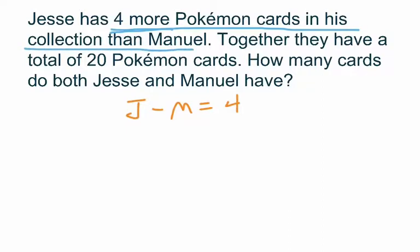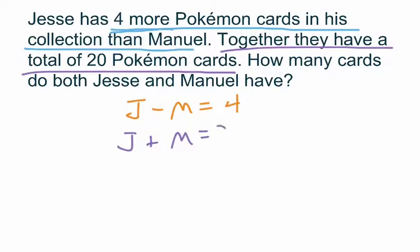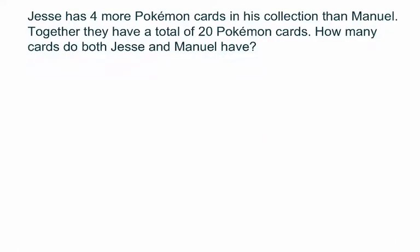That gives us the first equation from the first piece of information in the word problem. Secondly, together they have a total of 20 Pokemon cards — that means Jesse's amount plus Manuel's amount equals 20. So that's our system of equations. We have J minus M equals 4 as one equation, and J plus M equals 20 as the second.